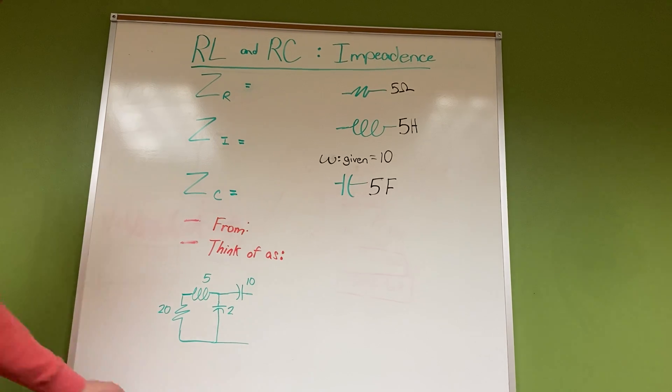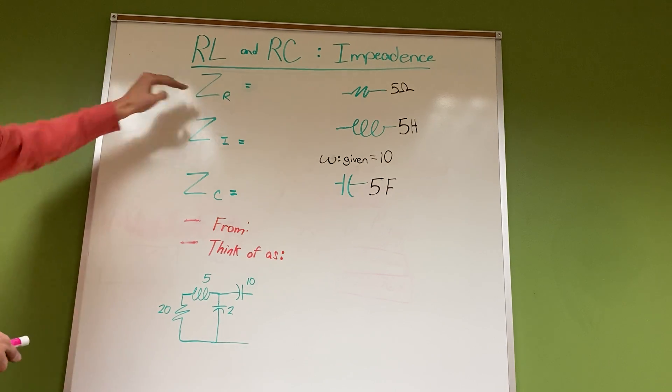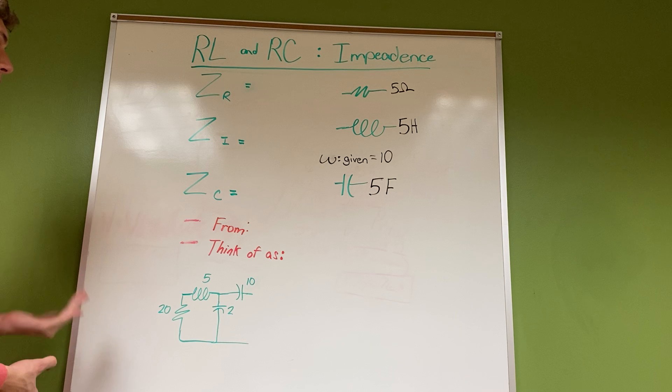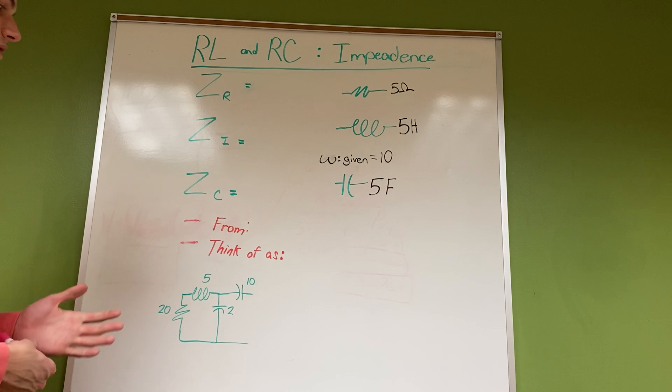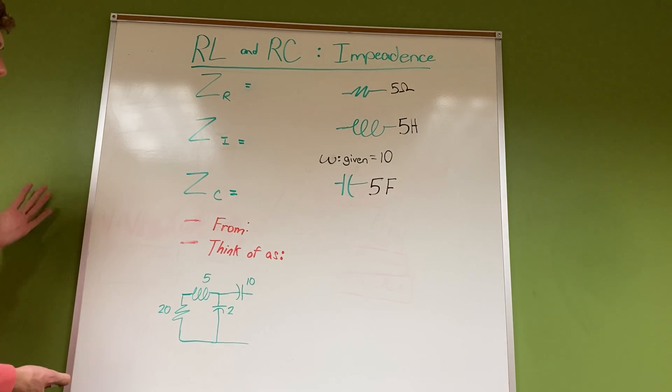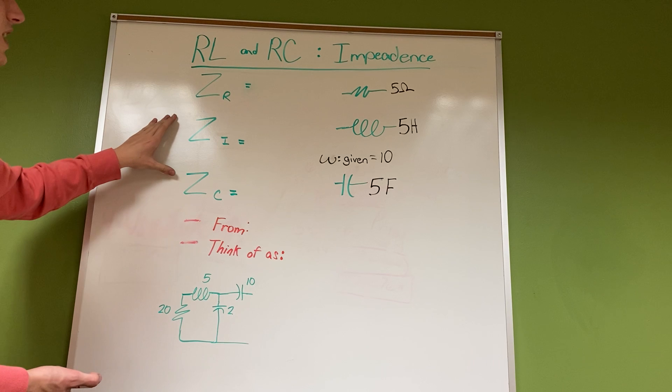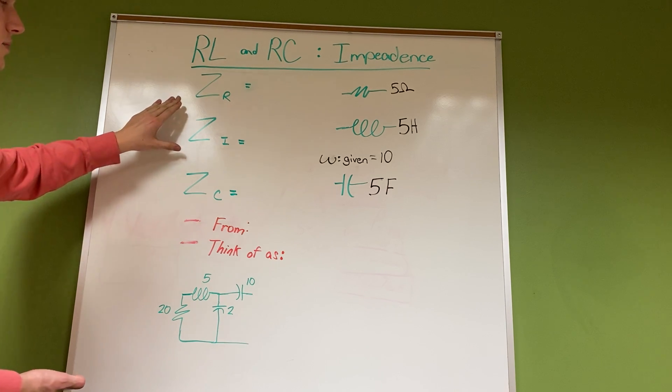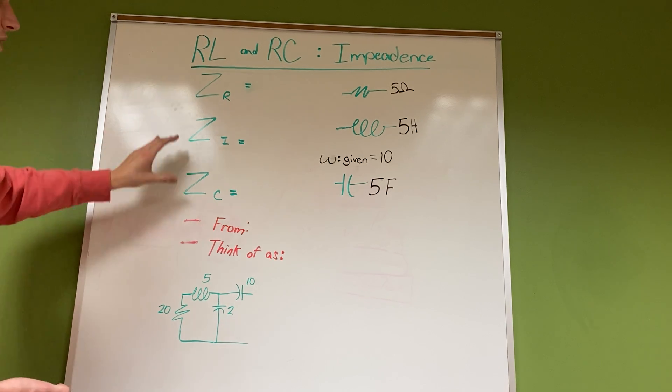In this video, I'll be talking about RL and RC circuits dealing with impedance. Impedance is shown as Z, and I like to think about it as another form of resistance. But with resistance, we have it as positive or slowing the flow of a current.